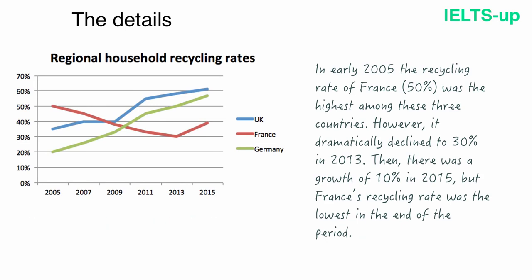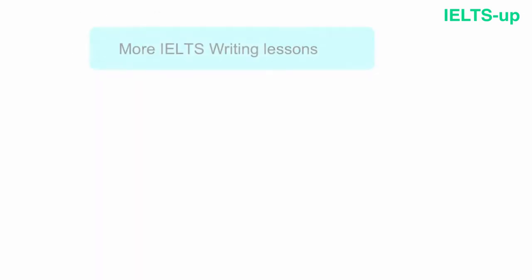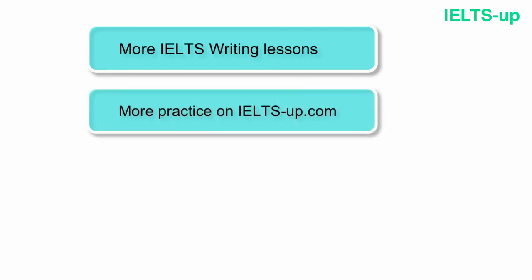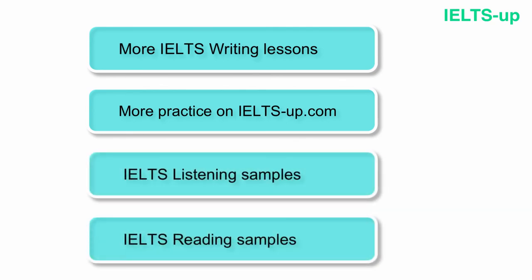Always write your task 1 answer in one tense — if you are describing something that happened in the past, write the whole description in past simple tense. That's all with our writing — this piece of writing is a band 9 answer. To read this lesson and many other useful lessons for IELTS writing, follow the link above. You can also visit ieltsapp.com to find reading samples, listening samples, advanced vocabulary and other practice materials. Good luck and see you soon in another IELTS App lesson.